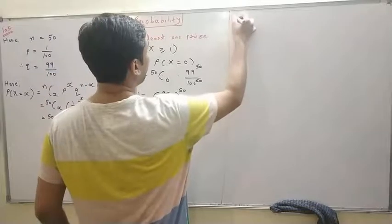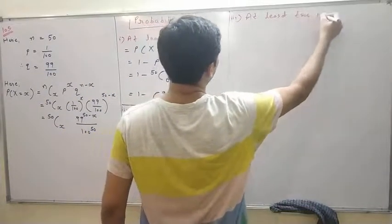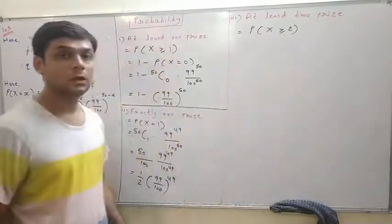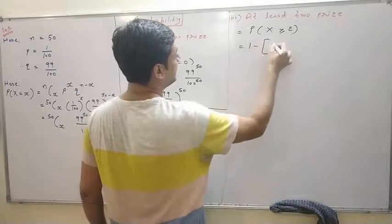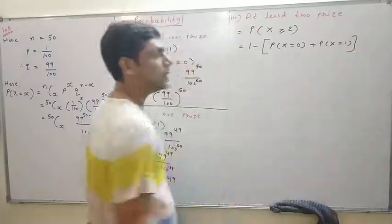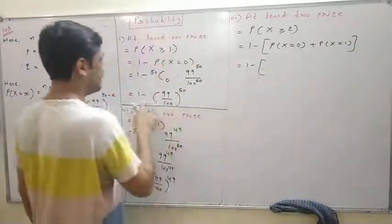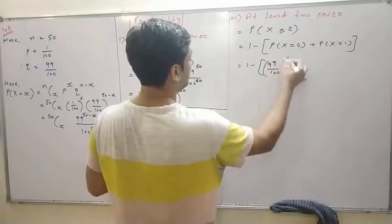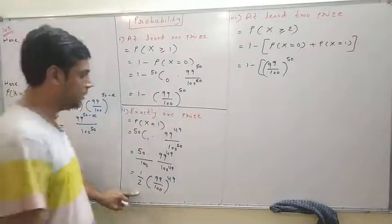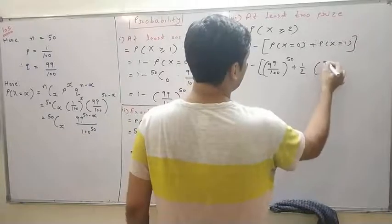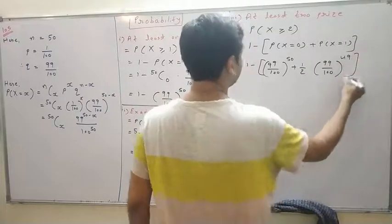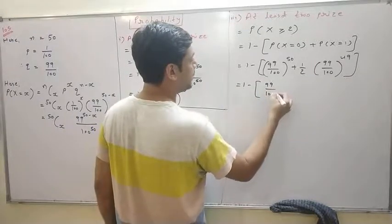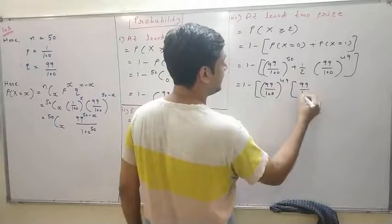Third question: at least two prizes means find P(x ≥ 2). P(x ≥ 2) equals 1 minus P(x = 0) plus P(x = 1). We already found P(x = 0) is (99/100) raised to 50, and P(x = 1) is (1/2) times (99/100) raised to 49. Simplifying, we can take (99/100) raised to 49 as a common factor from both terms.